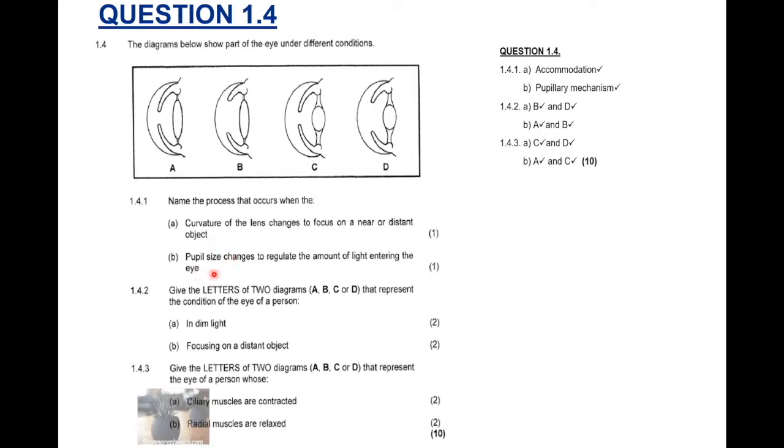B. Name the process that occurs when the pupil size changes to control, regulate, the amount of light entering. So, amount of light entering the eye, we should know that is pupillary mechanism.